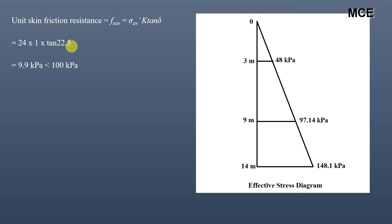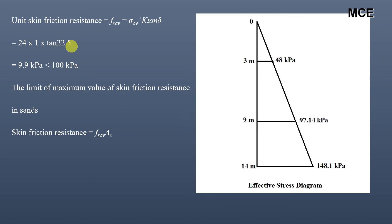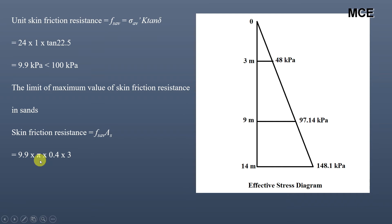This value of 9.9 kPa is less than 100 kPa, which is the limit of the maximum skin friction resistance in sands. So the unit skin friction resistance in this soil layer is 9.9 kPa. The skin friction resistance equals unit skin friction resistance multiplied by the surface area of the pile in this layer: 9.9 × π × 0.4 × 3 = 37 kN.